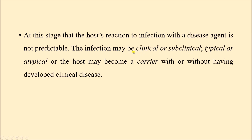Clinical cases have signs and symptoms, while in subclinical cases there are no signs and symptoms. We can have typical or atypical clinical features — typical means the expected signs and symptoms for the disease; atypical means the signs and symptoms are not typical for that particular disease. Sometimes a person does not even develop disease, or may develop disease and get cured, but the pathogen can survive in his body and he continues spreading the infectious agent into the environment for a long period of time — so he can become a carrier without developing clinical disease.